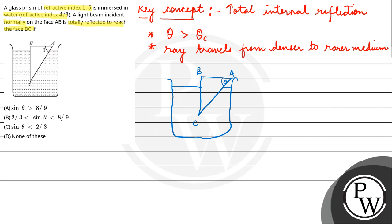Now, on the AB face, light is incident normally. If it is normally incident, it will enter. And because it is internally reflected, it reaches BC.